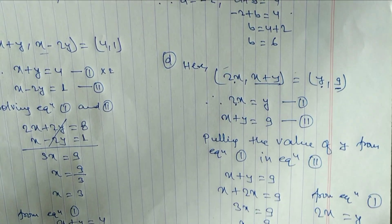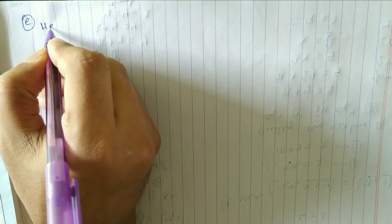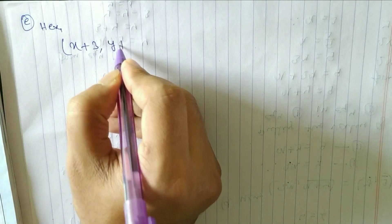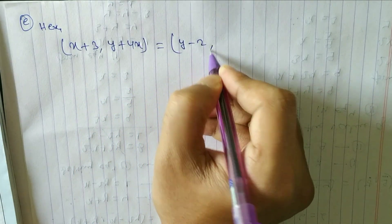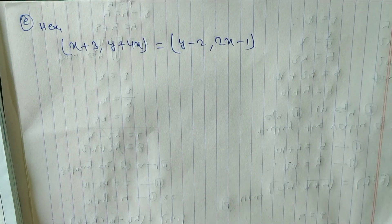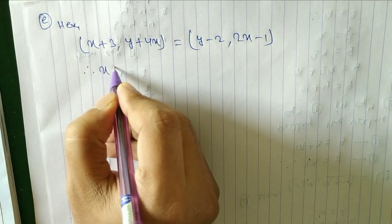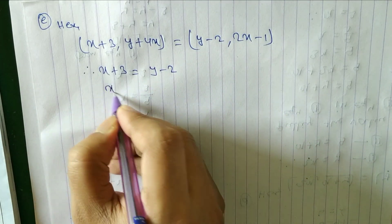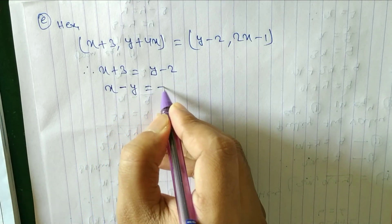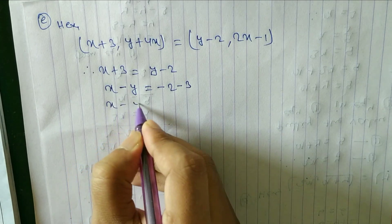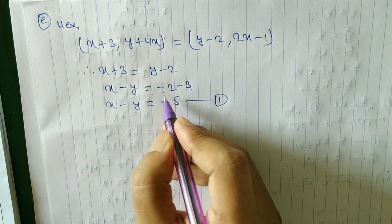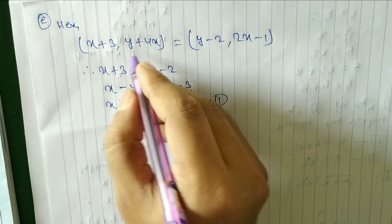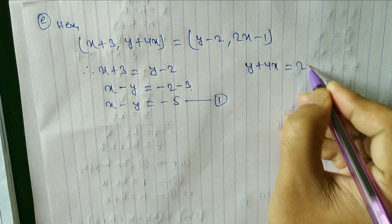Now look at question number 1e. The question is: (x+3, y+4x) = (y-2, 2x-1). We have to find x and y. Comparing x-components: x + 3 = y - 2. Rearranging: x - y = -2 - 3 = -5. This is equation 1.